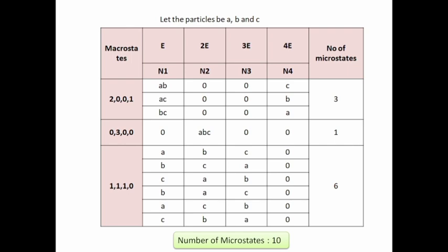At the equilibrium condition, the (1, 1, 1, 0) macrostate has the highest number of microstates — that is 6. So the probability of the (1, 1, 1, 0) macrostate occurring will be highest.